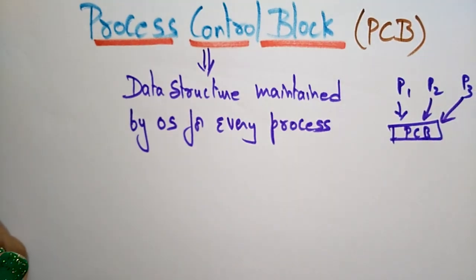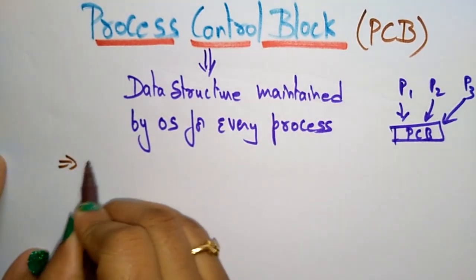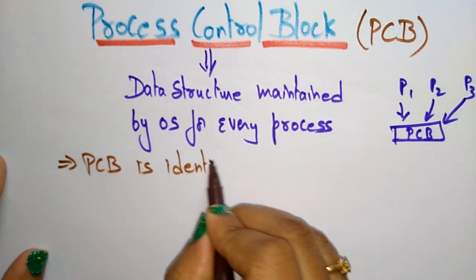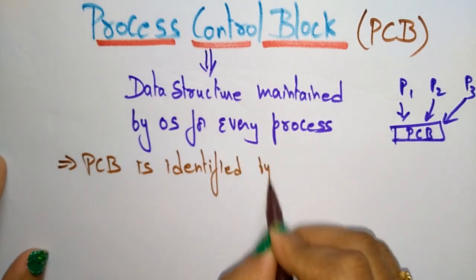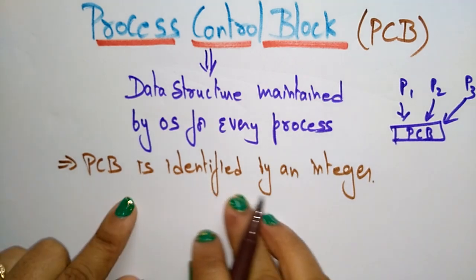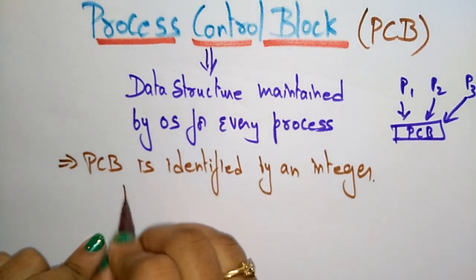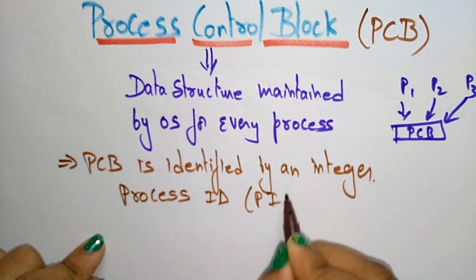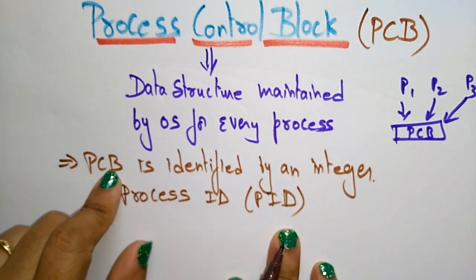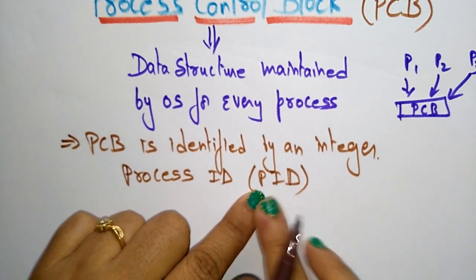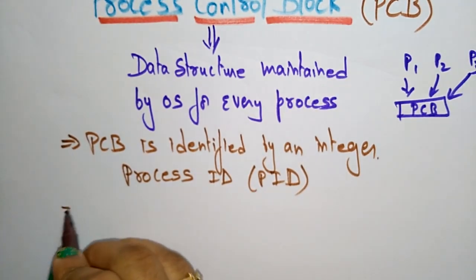The Process Control Block is identified by an integer — that is the Process ID, PID. So based on the PID we can identify which process it is: P1, P2, or P3.